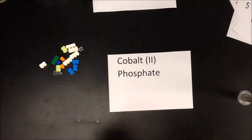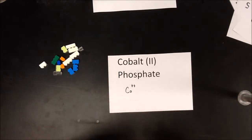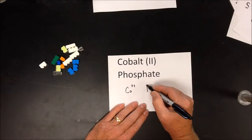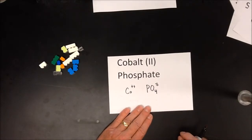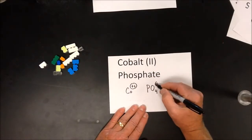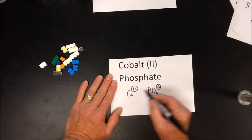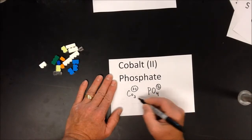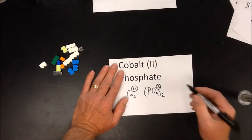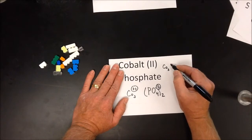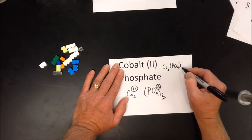Next is cobalt(II) phosphate. Cobalt(II) has a 2+ charge. Phosphate comes from 'Phoenix' — four consonants, three vowels — so phosphate is PO₄ with a minus 3 charge. With plus 2 and minus 3, the LCM of 2 and 3 is 6. I need three cobalts and two phosphates. The formula is Co₃(PO₄)₂ — parentheses needed because the subscript outside is 2.